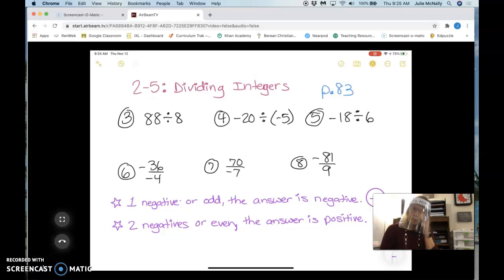Today we're talking about dividing integers, and the rules for dividing integers are the same as the rules for multiplying integers. At the bottom you'll see the two rules. If you have one negative or an odd number of negatives, the answer is negative. And if you have two negatives or an even number of negatives, the answer is positive. That's right.